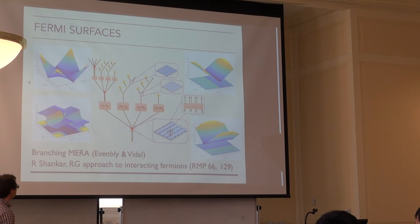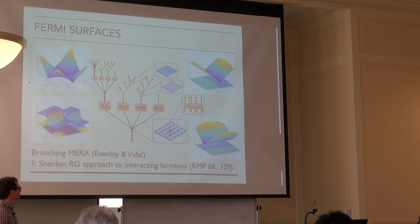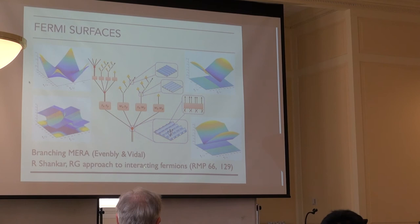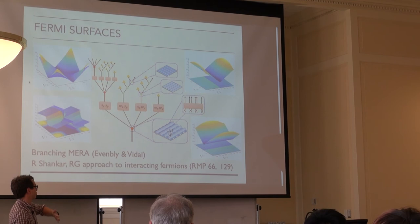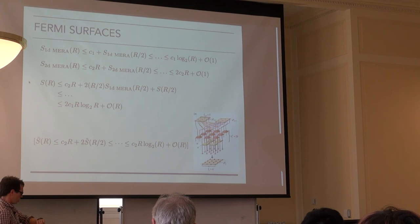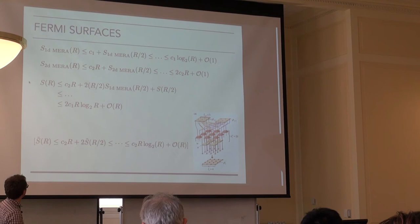This fits within the general concept of branching MERA introduced by Evenbly and Vidal, though the concrete branching MERA they had in mind for targeting Fermi surfaces in 2D was slightly different. I think this one fits better with the spirit of RG for Fermi surfaces, as described in the nice paper by Shankar, where you interpret a 2D Fermi surface as a collection of one-dimensional chiral fermions. This is shown to capture the correct entanglement, and the original proposal had a different branching structure.